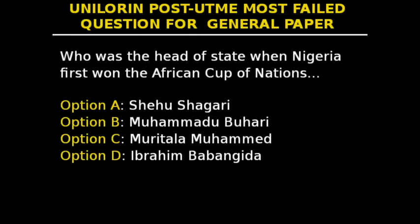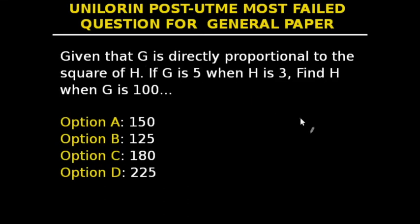Question 12: Who was the head of state when Nigeria first won the African Cup of Nations? Nigeria first won the African Cup of Nations in 1980. The previous year, military head of state Olusegun Obasanjo transferred power to the civilian regime of Shehu Shagari. So our answer is option A: Shehu Shagari.